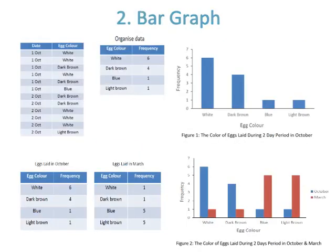Number two is bar graph. Figure one shows the color of eggs laid during a two-day period in October, while figure two shows the color of eggs laid during two days in both October and March. The bar graph in example two helps you to compare two months' data easily.